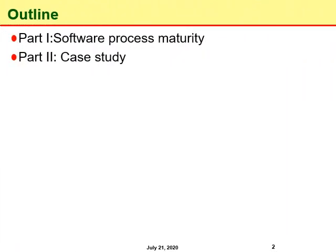This lecture is divided in two parts. In part 1 we will see how software process maturity affects the progress and productivity of software organizations, whereas in part 2 we will discuss a case study related to software process improvement.